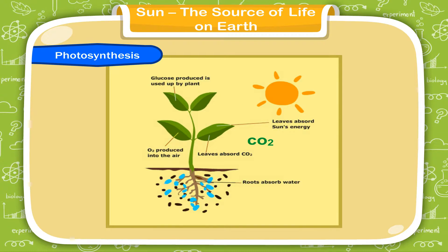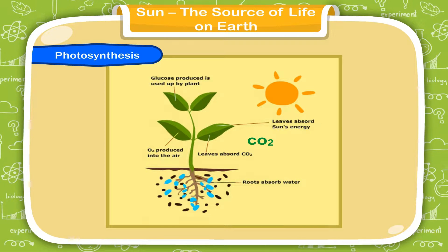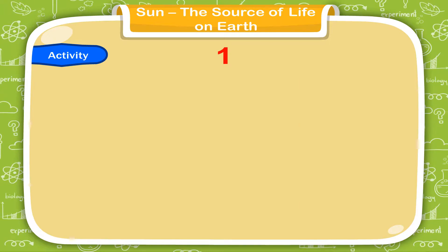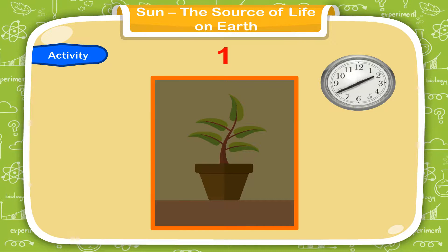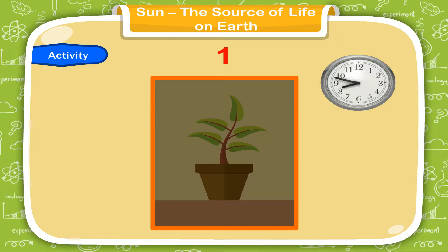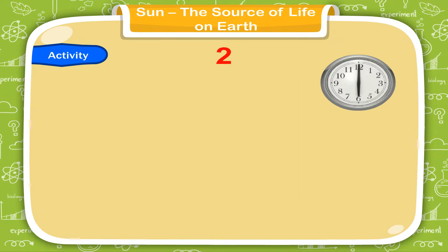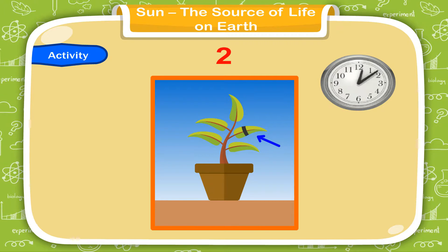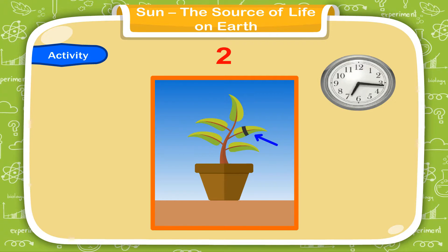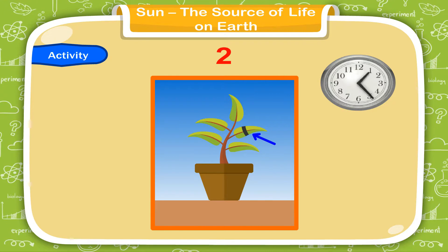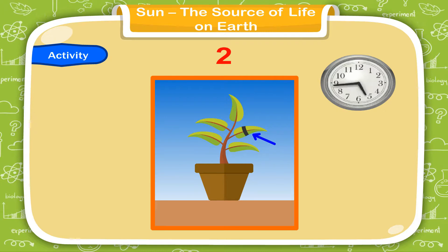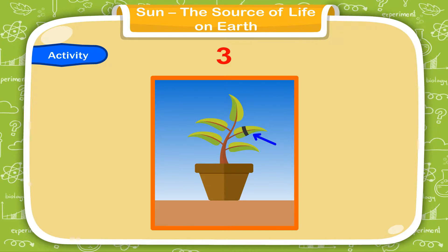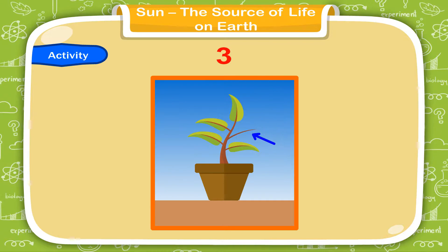Let us do an activity to show the role of sunlight. Take a potted plant and put it away from the sunlight in a dark room for about 24 hours. Then cover a part of one leaf with a strip of black paper and put the plant back in the sunlight for 5 to 6 hours.